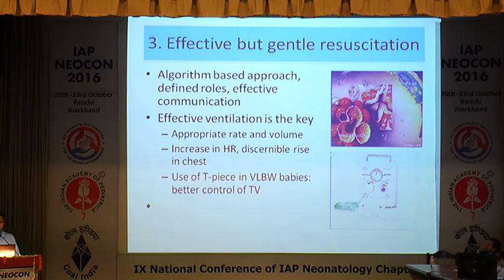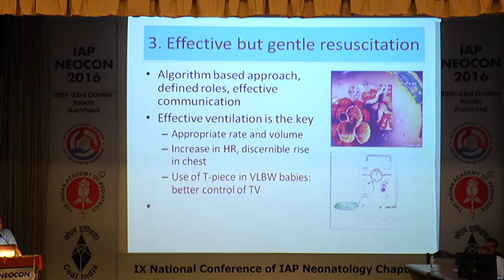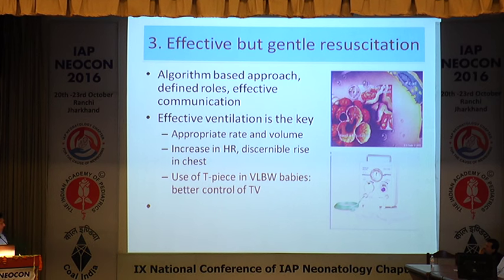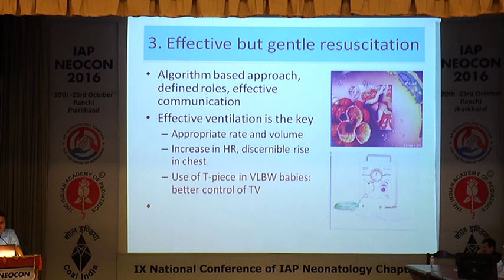Most important soon after birth is doing effective but gentle resuscitation. We know that a lot of volume or pressure going into the lungs can cause barotrauma and volutrauma, leading to pulmonary air leaks and even chronic lung disease. We need to follow an algorithm-based approach, define roles, and have effective communication. Effective ventilation is the key — one has to give an appropriate rate of 40 to 60 per minute and appropriate volume. The maximum chances of overdistension occur during resuscitation when the baby is not responding well. Use of T-piece resuscitators in VLBW babies gives better control of tidal volume delivered to the baby and helps control PIP during resuscitation.